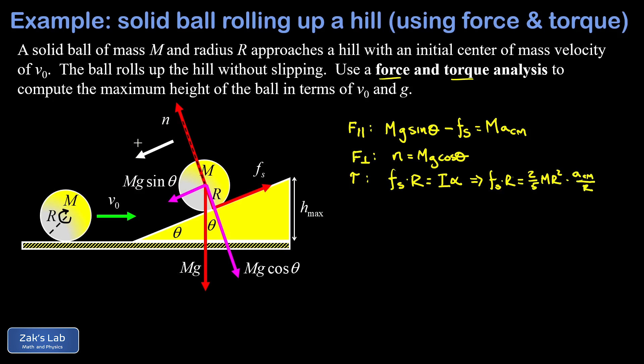So now I can see one of these R's cancels on the right hand side, but then I can divide out another R and that leaves me with a nice little expression for fs in terms of M and the center of mass acceleration. So we're just going to take that and plug it right into our first equation for the parallel force analysis. And I end up with Mg sinθ minus 2/5 Ma equals Ma.